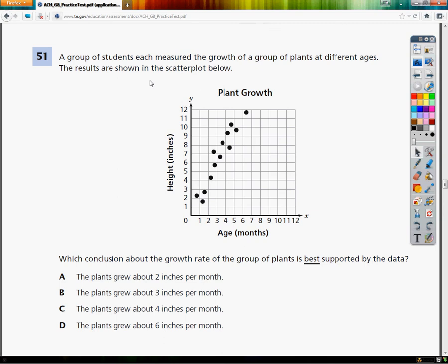Which conclusion about the growth rate of the group of plants is best supported by the data? I'm either moving 2 inches per month, which means that I'm going up 2 inches for every 1 month that I go over. Or it's 3 or it's 4 or it's 6.